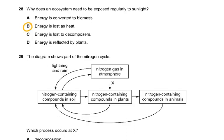Question 28: why does an ecosystem need to be exposed regularly to sunlight? Energy is lost as heat at each trophic level, so the sun must continuously replenish the energy. This is a question on the recycling of energy.